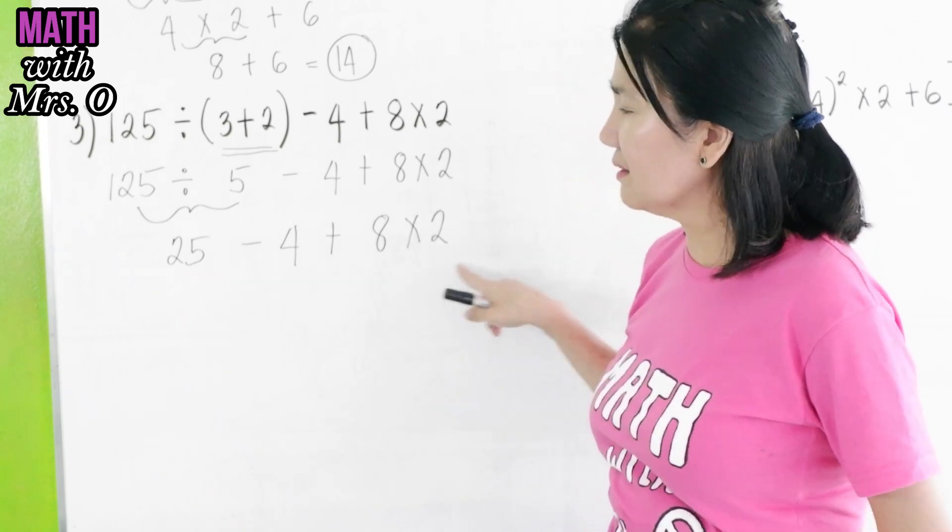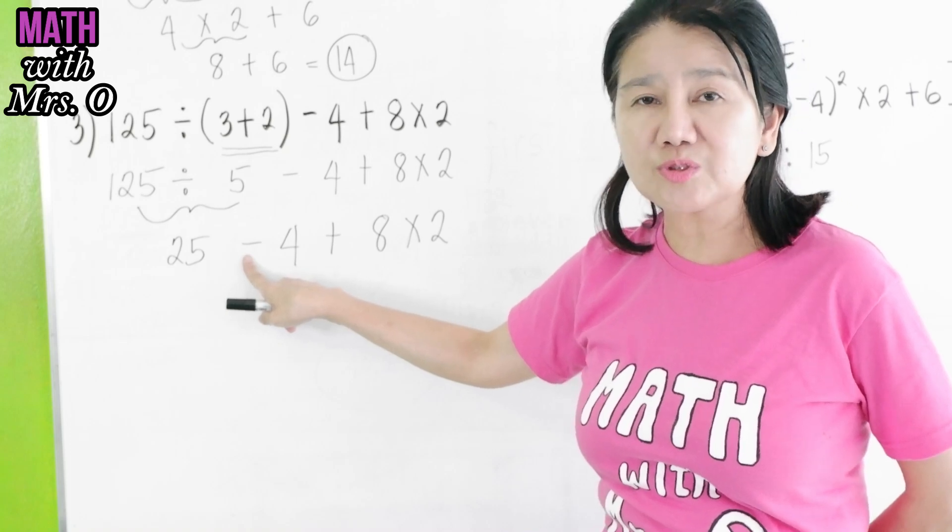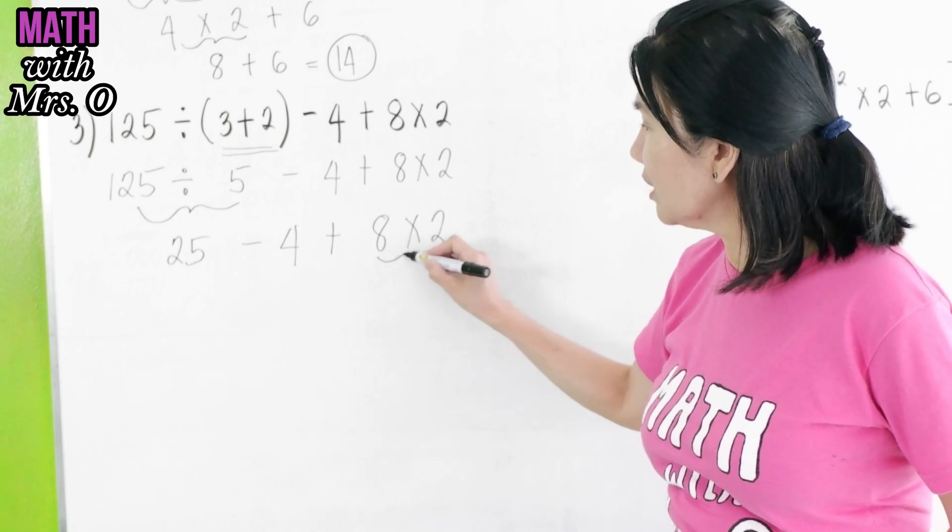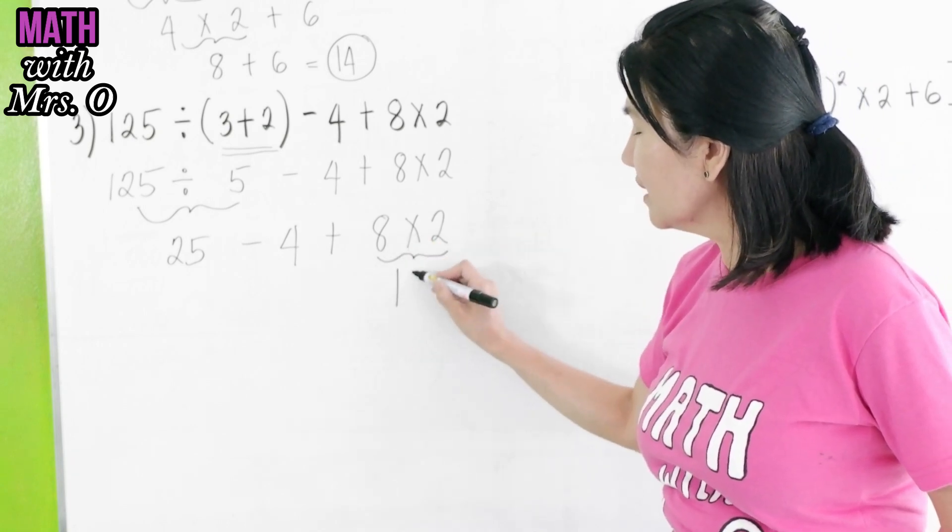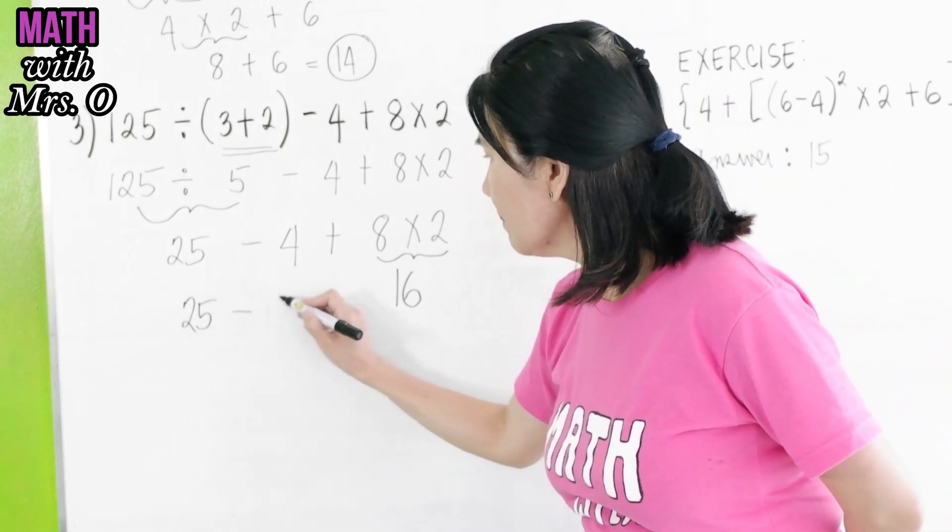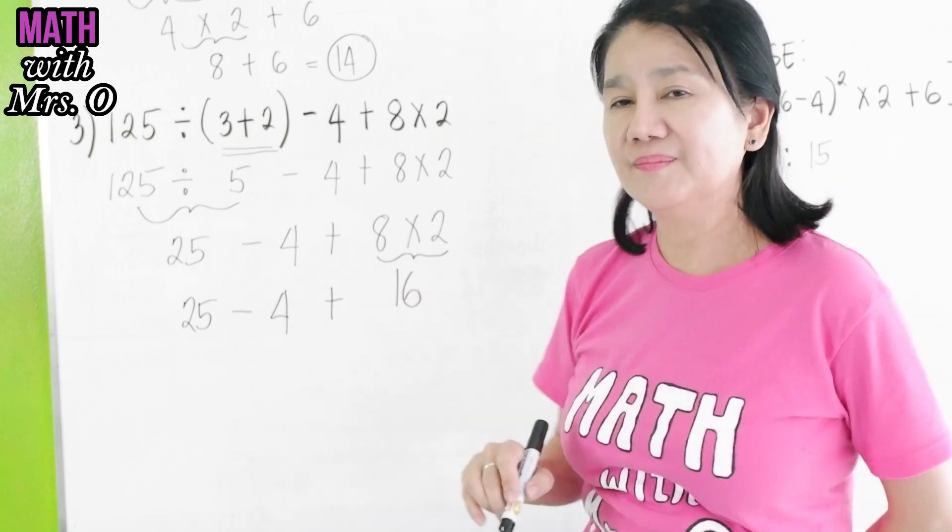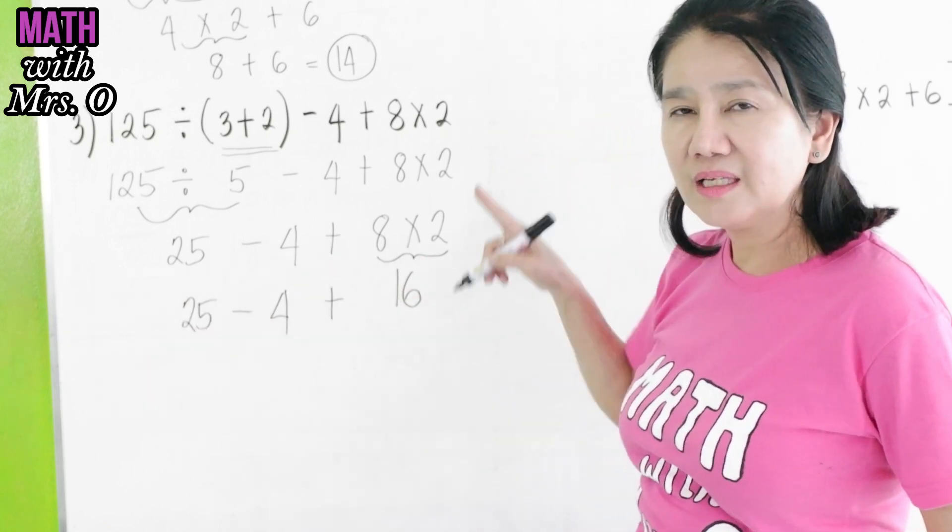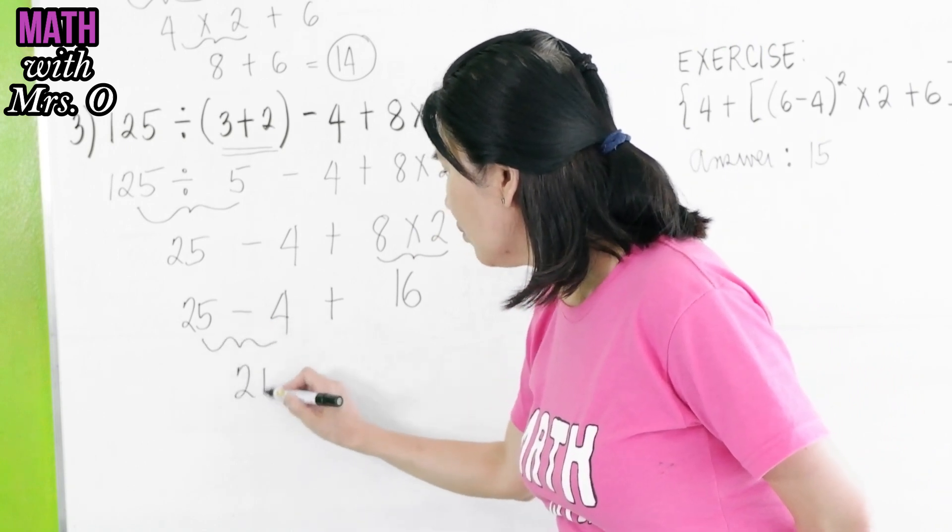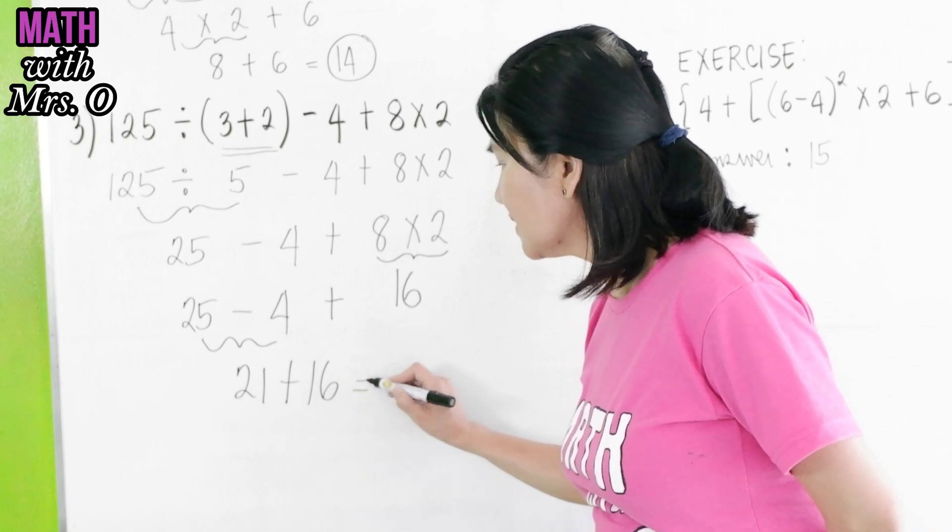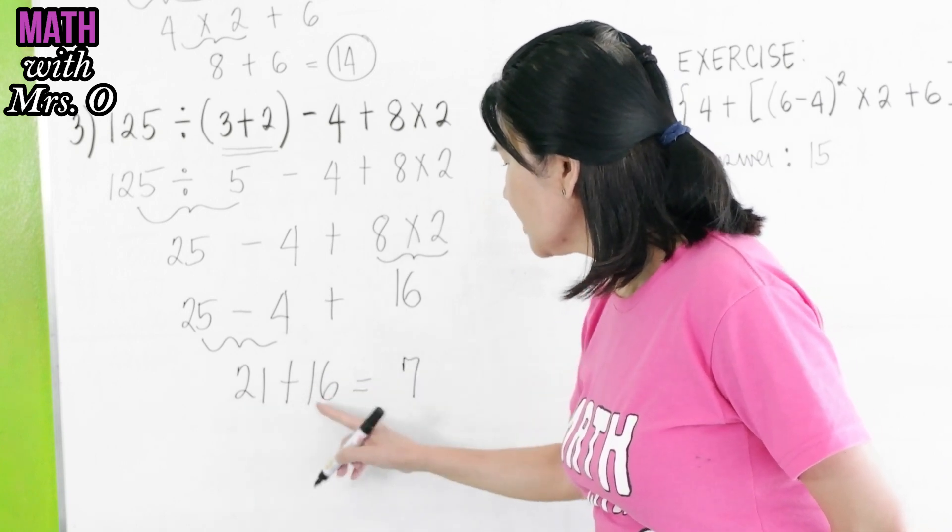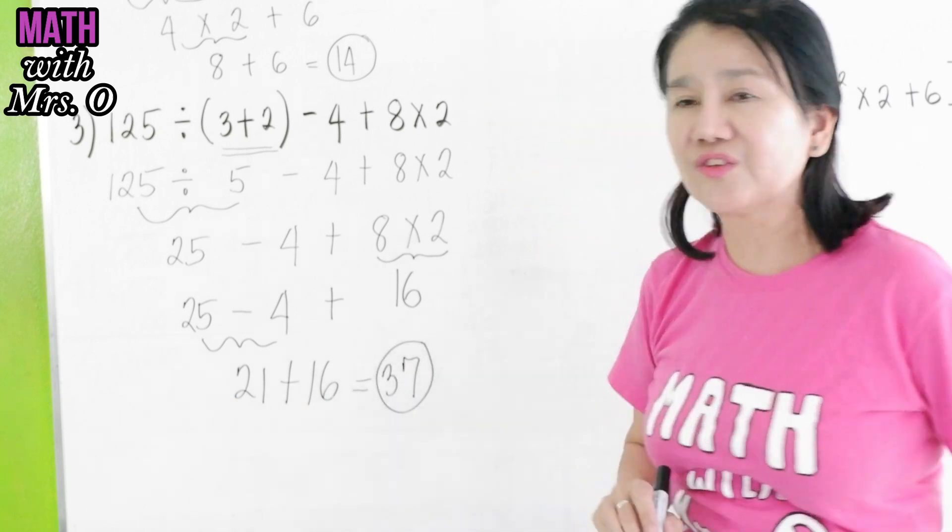From left to right, there's a subtraction. But you cannot do subtraction if there is still multiplication or division. So, you have to multiply these two first. You get 8 × 2 here is 16. So, 25 - 4 + 16. Now, from left to right, MD or AS. So, we can now have 25 - 4 is 21 + 16. This gives us 6 + 1 is 7. 2 + 1 is 3. So, our answer is 37.